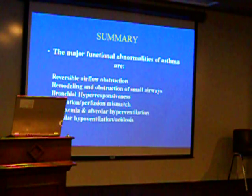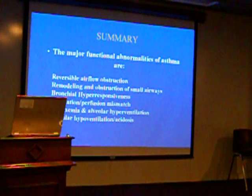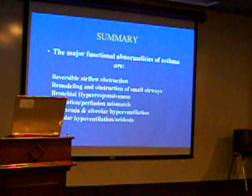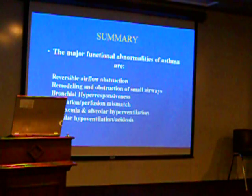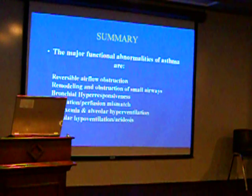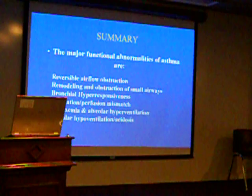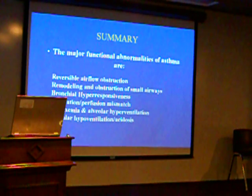To summarize: the major functional abnormalities of asthma are reversible airflow obstruction, which you can see on spirometry. Remember, a 12% improvement in FEV1 or 200cc marks reversibility. It doesn't make the diagnosis of asthma because other things can be reversible, but this is typical and classic of asthma. Remember, remodeling of the smaller airways — we talked about that last time.